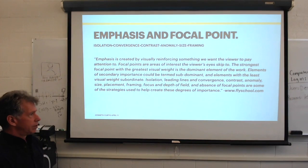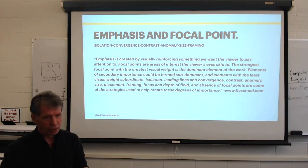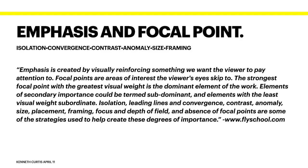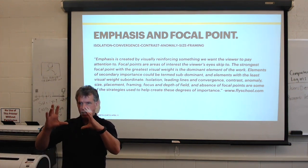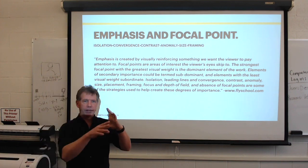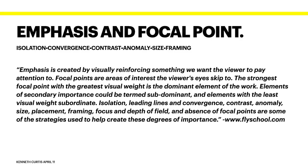Again, like most lectures, I'm going to start by reading what it is that you're going to be working towards. Emphasis is created by visually reinforcing something we want the viewer to pay attention to. Focal points are areas of interest the viewer's eyes skip to. If we break this down again, it's the emphasis we put on an object and the focal point is what the viewer looks at, which is where the emphasis is placed. The strongest focal point with the greatest visual weight is the dominant element of the work. Elements of secondary importance could be termed subdominant and elements with the least visual weight subordinate.